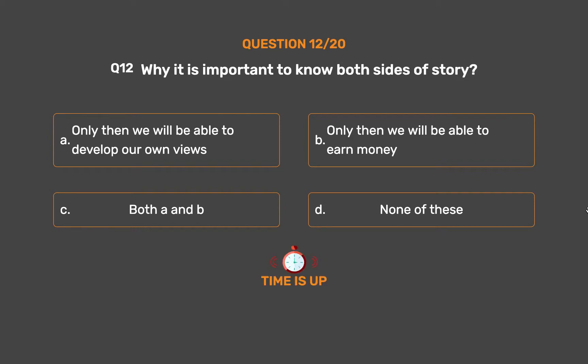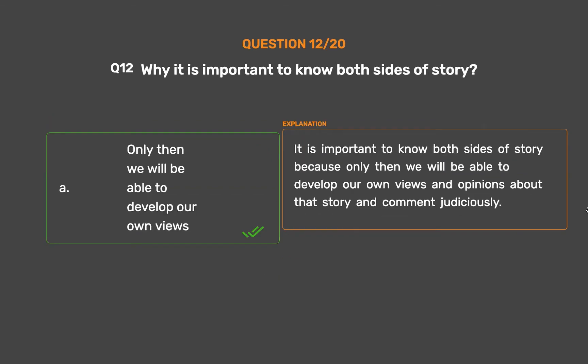The correct answer is Option A: Only then we will be able to develop our own views. It is important to know both sides of a story because only then we will be able to develop our own views and opinions about that story and comment judiciously.